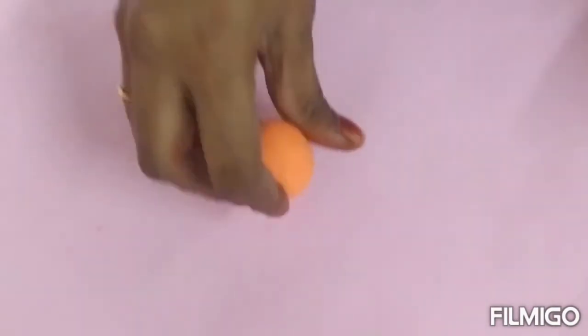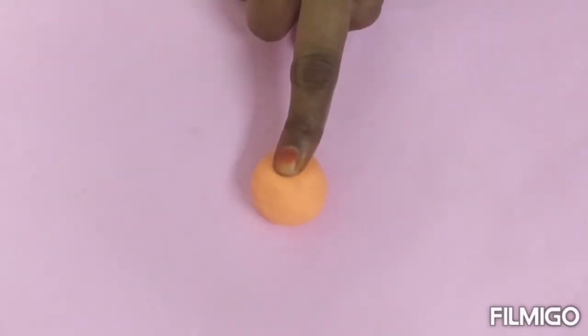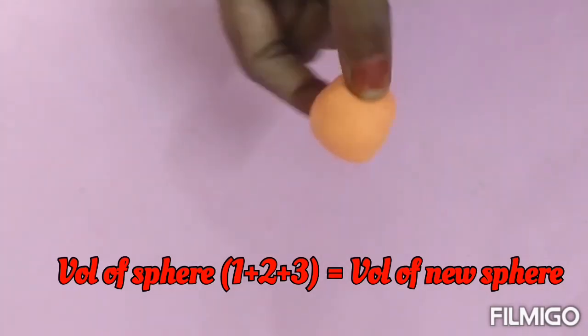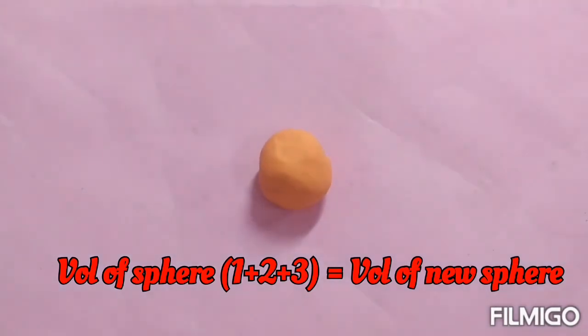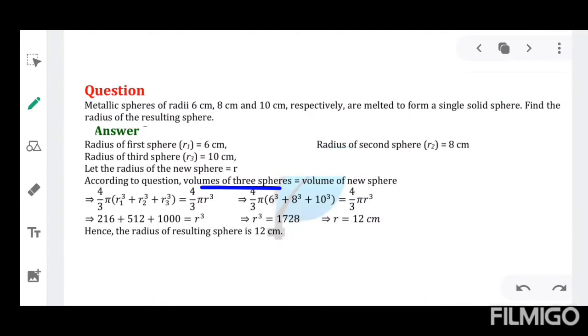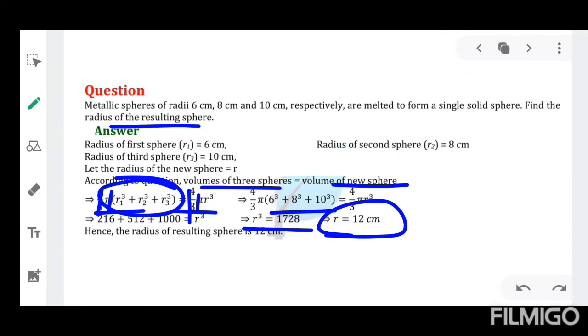Definitely it will be equal to the sum of the volume of the old three spheres, because we are forming this new sphere using those three spheres. So volume of sphere 1 plus 2 plus 3 will be equal to the volume of the new sphere. We will write the formula, then we will substitute the values. 4/3, 4/3 will be cancelled and π, π will be cancelled. So we will be left with r₁³ + r₂³ + r₃³. We know the value of r₁, r₂, and r₃. We will substitute them. Then we will get r³ equals 1728. We have to find the radius of the resulting sphere. I have already given you the shortcut to find out the cube root of a number. 1728 - cube root of 1728 is nothing but 12 cm. So the radius of the resulting sphere is 12 cm.